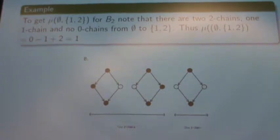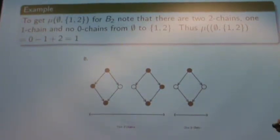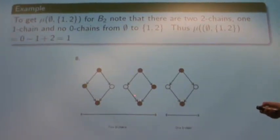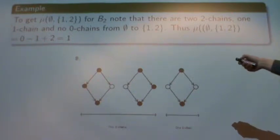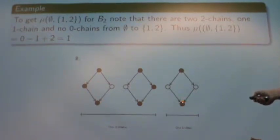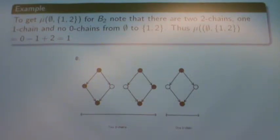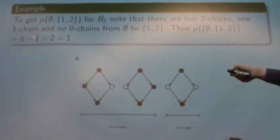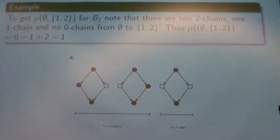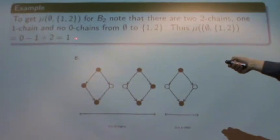To compute the Möbius function from minimal to maximal in B2, we count the 2-chains, 1-chains, and 0-chains. For the 2-chains, we need paths with two steps — there are just two of them. For the 1-chain, because we're going from the minimal to the maximal element, there's just one 1-chain. There are no 0-chains, because you would have to start and end with the same element. So we have 0 zero-chains, one 1-chain, and two 2-chains. Taking the alternating sum gives us a Möbius function of 1.